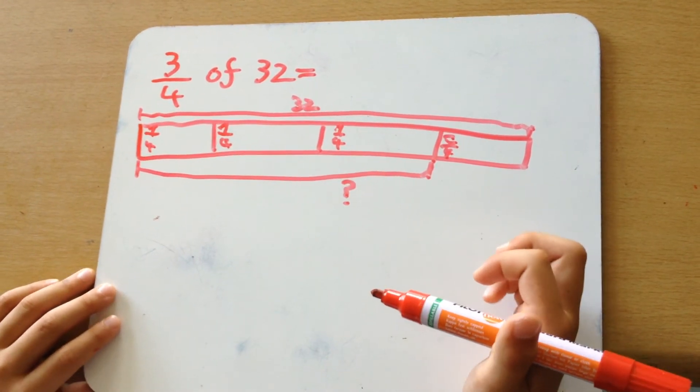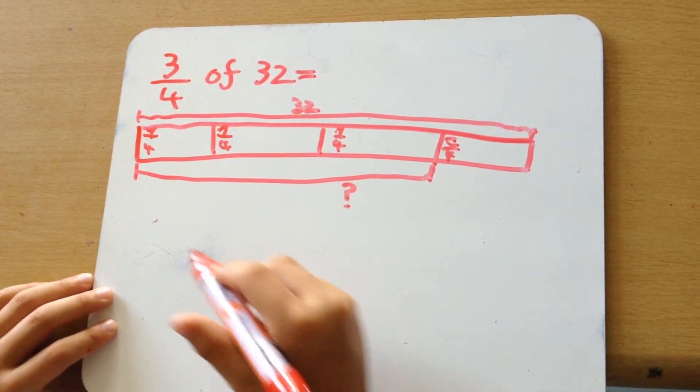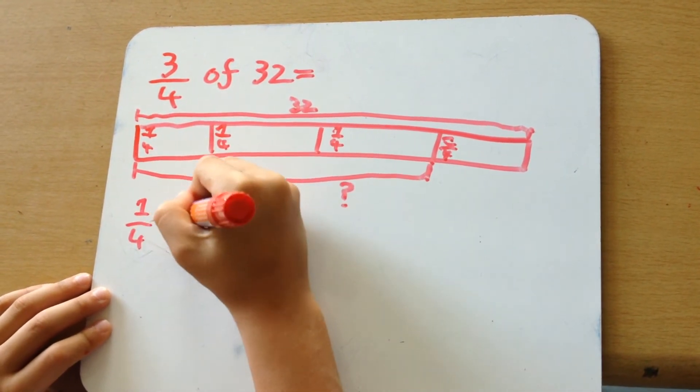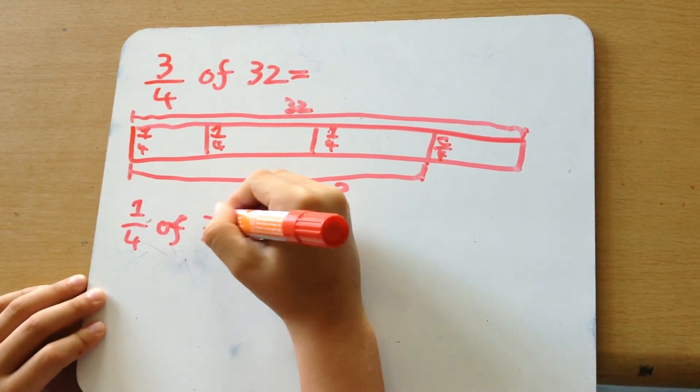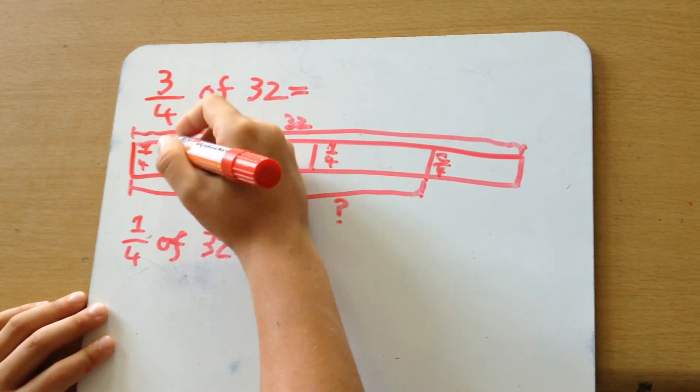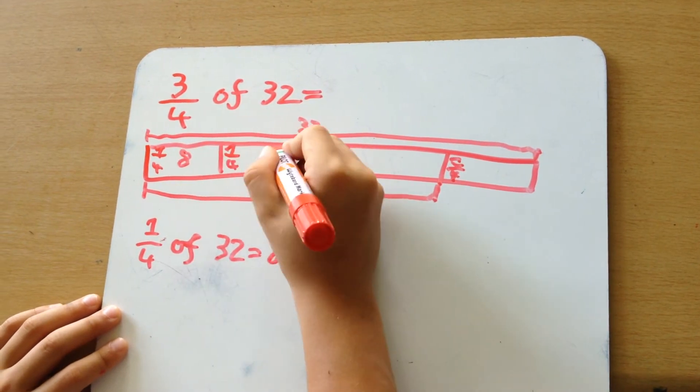And we'll have to find out what a quarter of 32 is. A quarter of 32 is eight. So we put eight in each block.